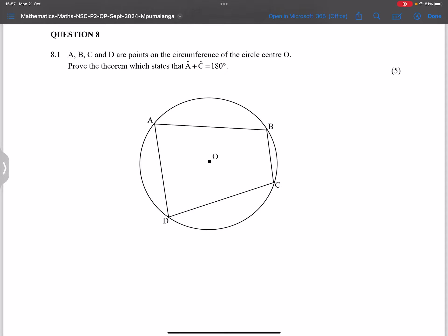Question 8 from this question paper: ABCD are points on the circumference of a circle center O. They say prove the theorem which states that A plus C is equal to 180.